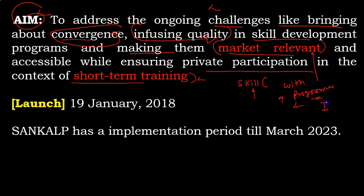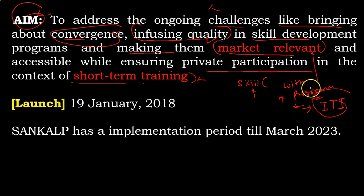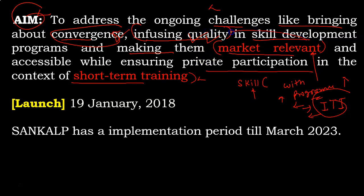For example, if any person has learned from an ITI — that is an Industrial Training Institute — this program will try to make that training market relevant. So these are the three targets of Sankalp: it will converge all programs, it will improve or infuse quality, and it will make all programs market relevant. That is the aim of this scheme.